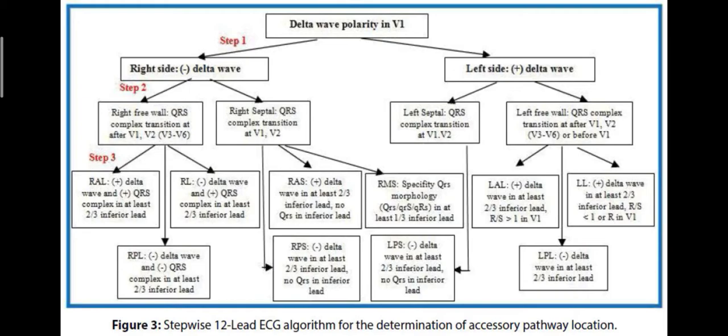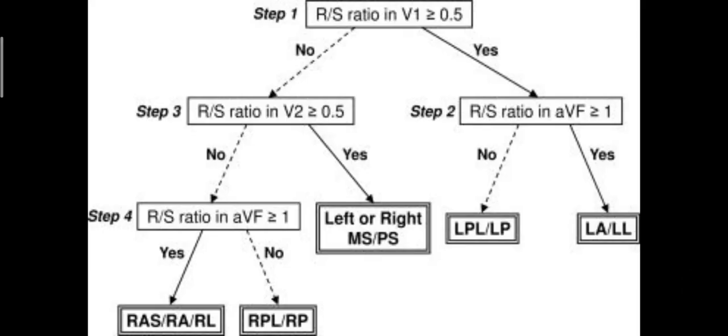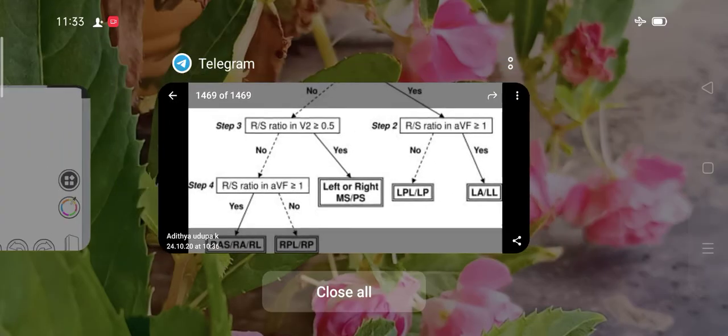Very important distinctions: if delta is negative but QRS is positive in at least two of three inferior leads, it is a right lateral pathway. If delta waves are positive in inferior leads, it is a right anteroseptal pathway. If delta waves are negative, it is a posterior pathway. If there is a characteristic rabbit ear QRS morphology in a right-sided pathway, you are dealing with a right mid-septal pathway.